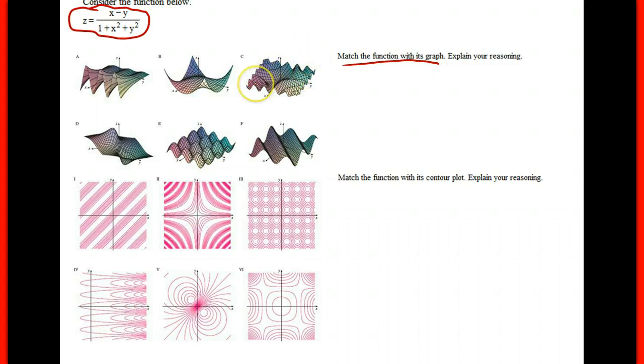The thing about these graphs is that many of them have a periodicity. C, E, F, and A are all periodic in some kind of way. It must have some kind of trig involved. And so, by process of elimination, we have to take those out.